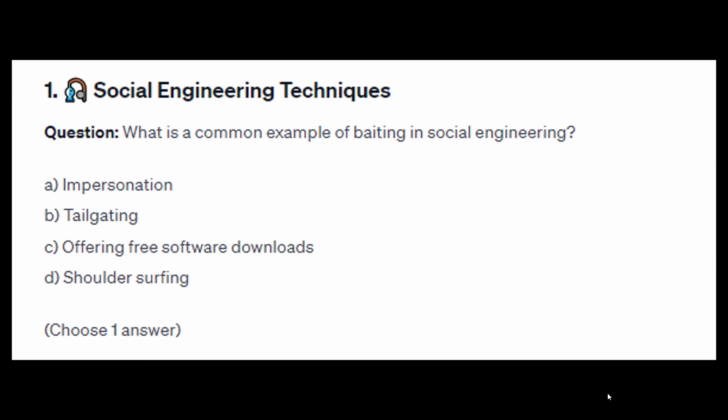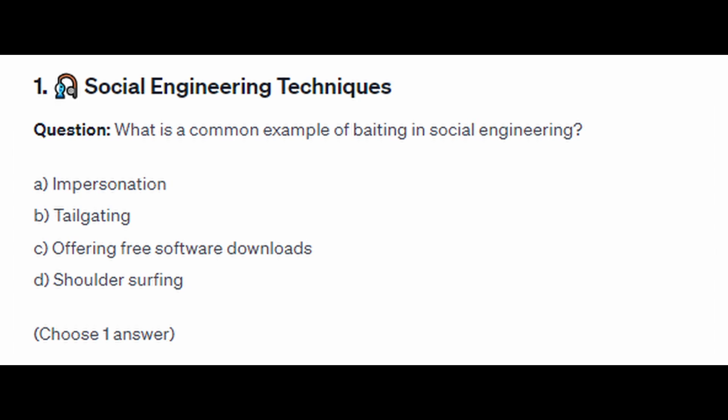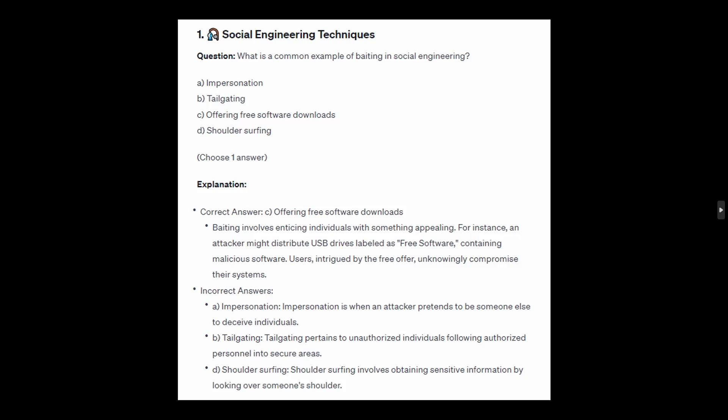What is a common example of baiting in social engineering? Is it A: impersonation, B: tailgating, C: offering free software downloads, or D: shoulder surfing?